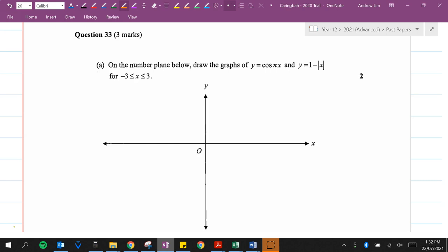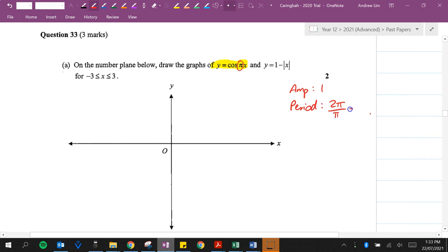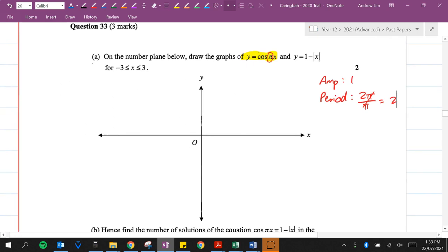So, the first thing I will do is I'll probably look at this function here, y equals cosine pi of x. I can see that the amplitude is going to be equal to 1 because there's an imaginary 1 out there. The period is going to be 2 pi over the coefficient of x, which is pi. So, the period is 2. And that should be enough for us to work out how to graph this.